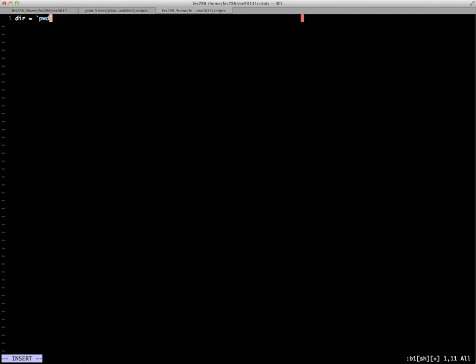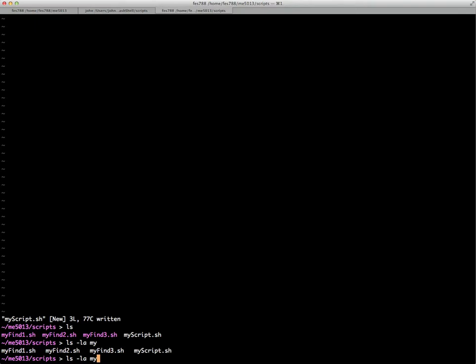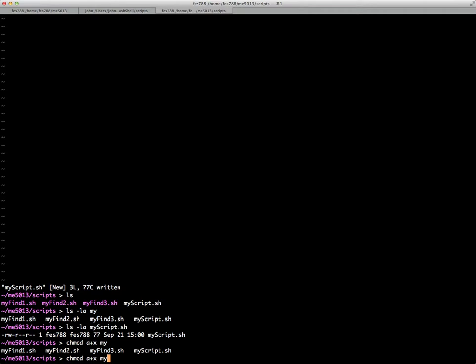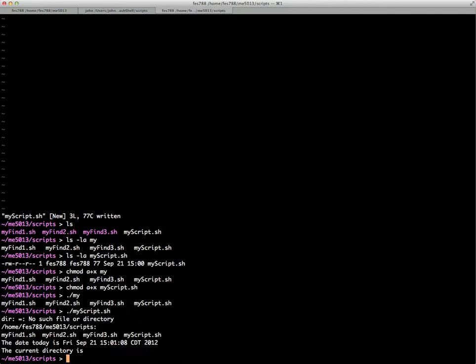And we'll go ahead and put some commands in it. So we'll say directory equals print working directory. So I'm adding a command here, and then we can echo the date, today is date, and then we can also echo the current directory is, and then we're going to access the directory, the variable that we assigned up there. So there's myscript. If we look at the permissions of myscript, we know it's not executable by default, so we need to make it an executable file. We have chmod all plus execute myscript, and then we can run it.